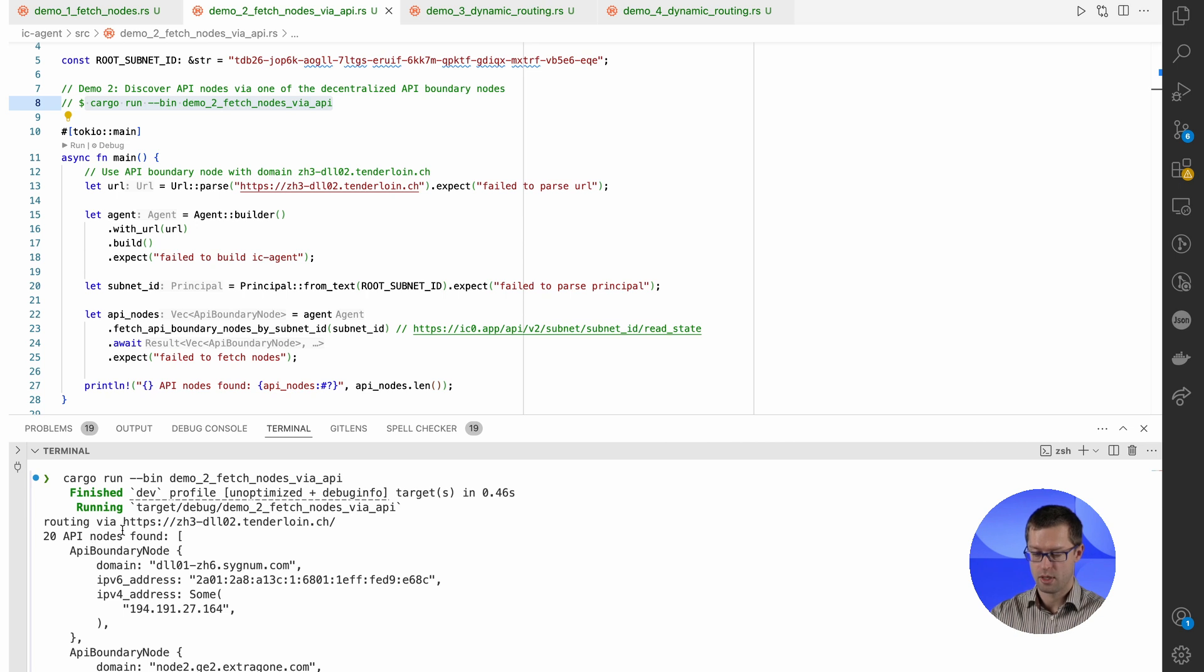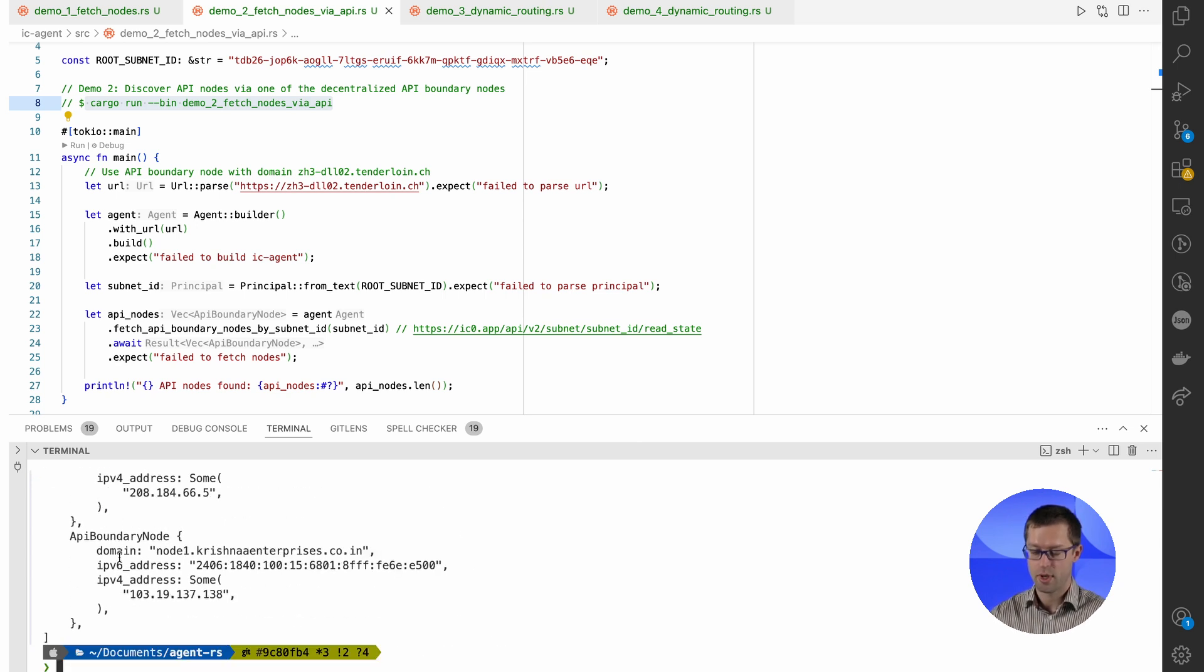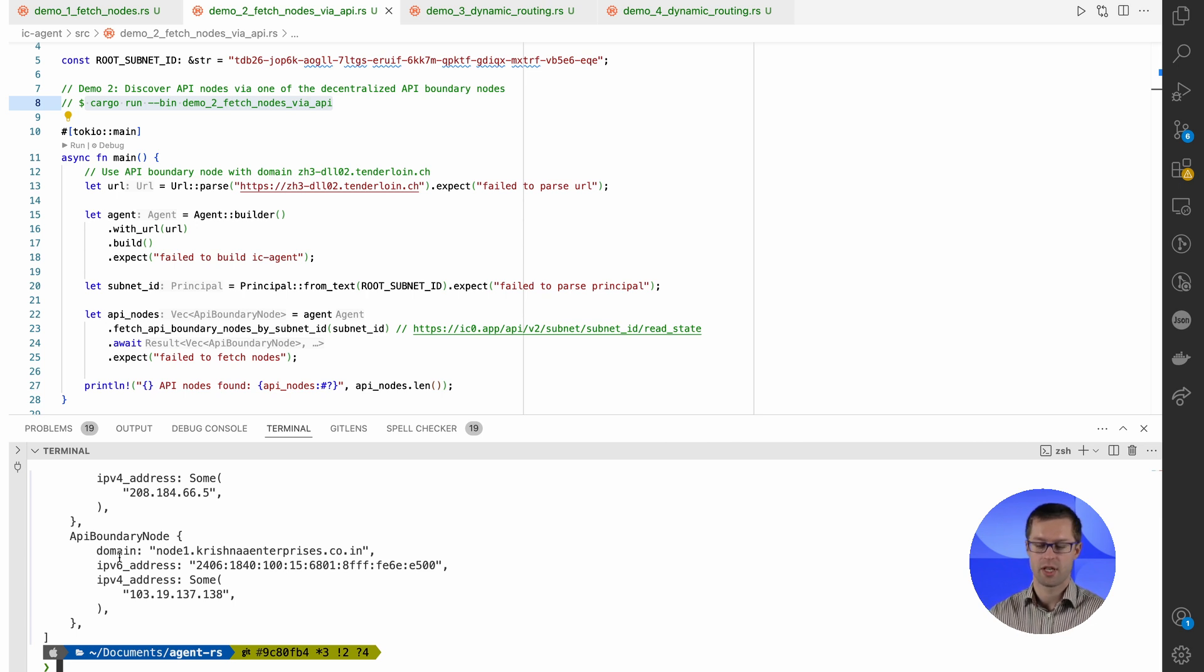As we can see, now request is routed through one of the API boundary nodes. We get the same response, of course, 20 existing API boundary nodes. And now we completely bypass the centralized architecture.